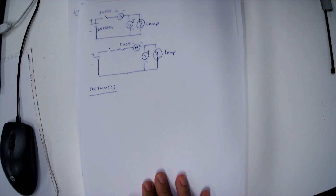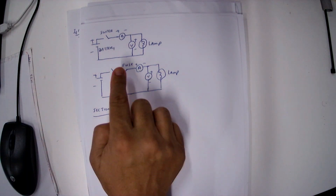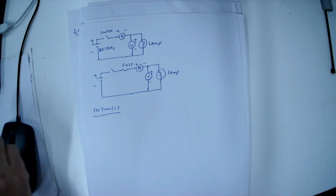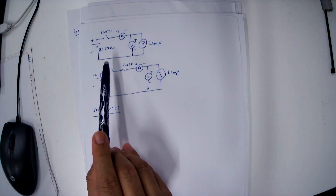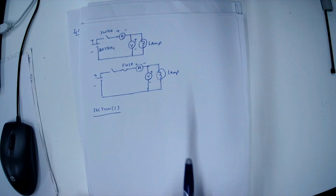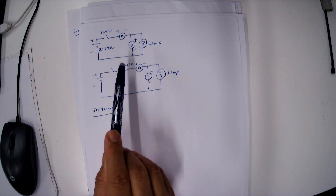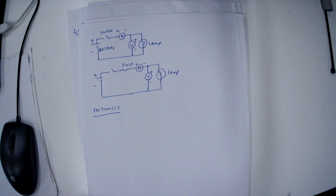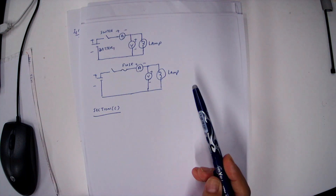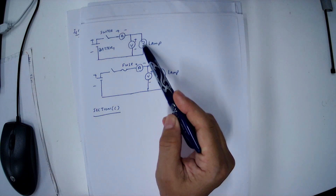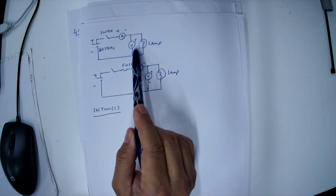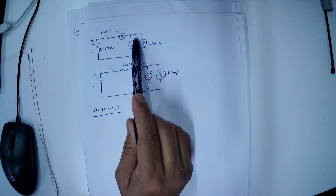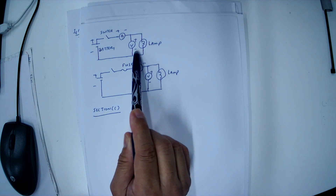So this circuit here — this is for the battery, battery connected, and series with the switch. Then we connect the ammeter positive, and then we connect it to the lamp. Voltmeter across the lamp: here voltmeter positive, here voltmeter negative.